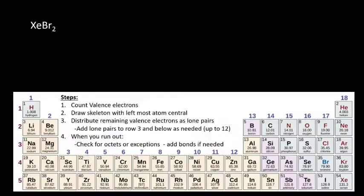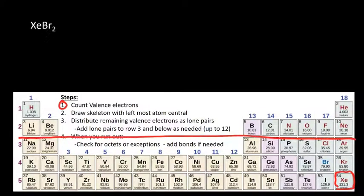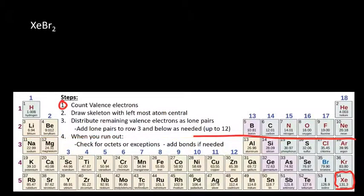Let's work some examples. Our first example is XeBr₂, and we're going to follow the same basic steps we did before. Step 1: count the valence electrons. Xenon is right here — notice, xenon is below row 3. So when we said it has to be row 3 or below, that means on the periodic table it has to be below this row: rows 3, 4, 5, or below. Those can actually break the octet rule. So as you start to draw this, notice the xenon is below the third row — it might break the octet rule.